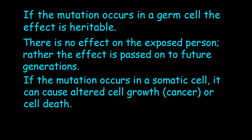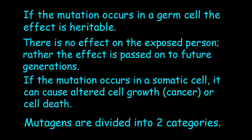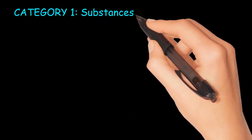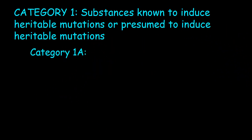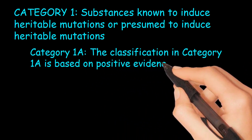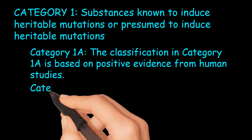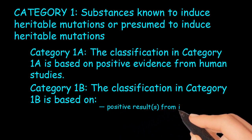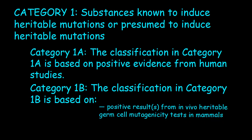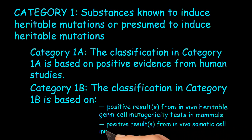Germ cells are the only cells responsible for reproduction, while somatic cells are the building blocks of the body. Mutagens are divided into two categories. Category 1: Substances known or presumed to induce heritable mutations. Category 1A: Based on positive evidence from human studies. Category 1B: Based on positive results from in vivo heritable germ cell mutagenicity tests in mammals, or positive results from in vivo somatic cell mutagenicity tests in mammals. In vivo refers to a study done within a living organism.